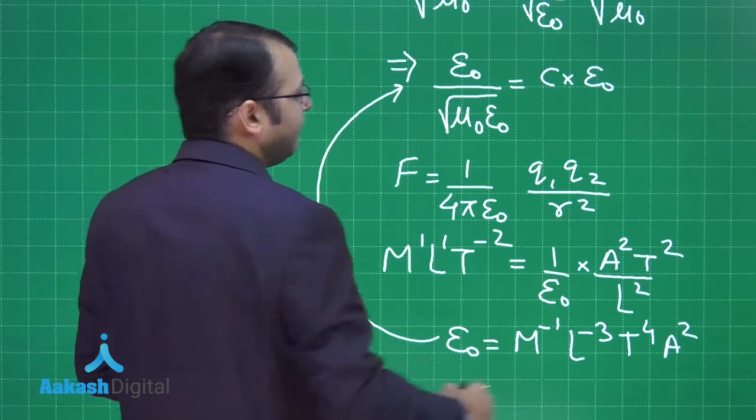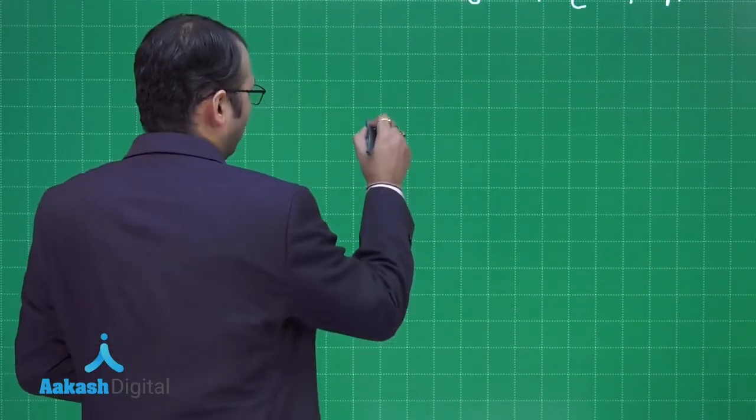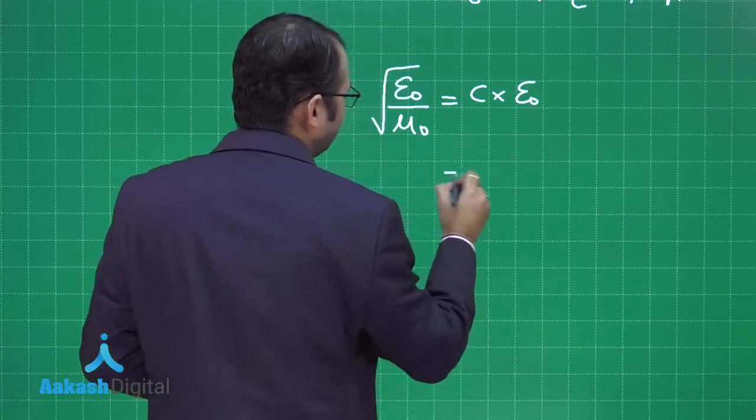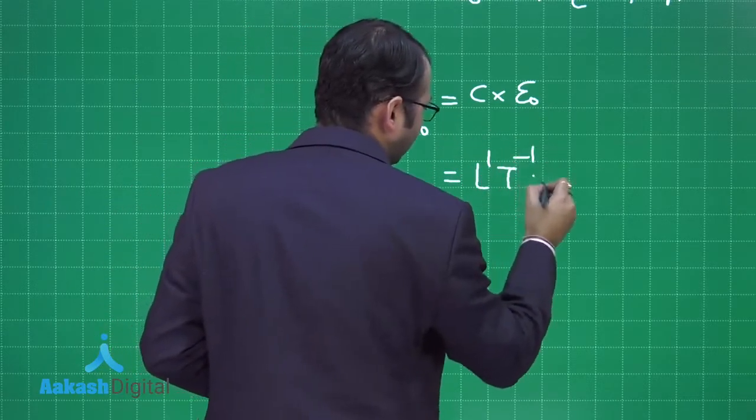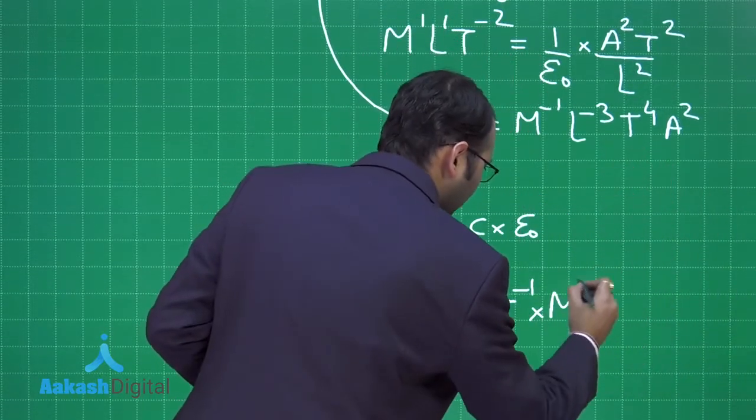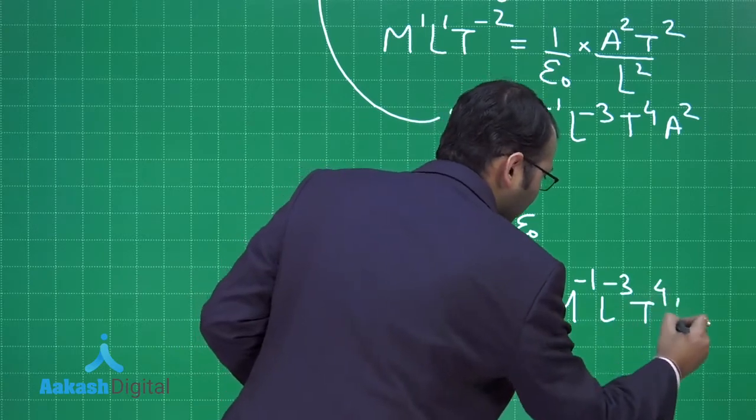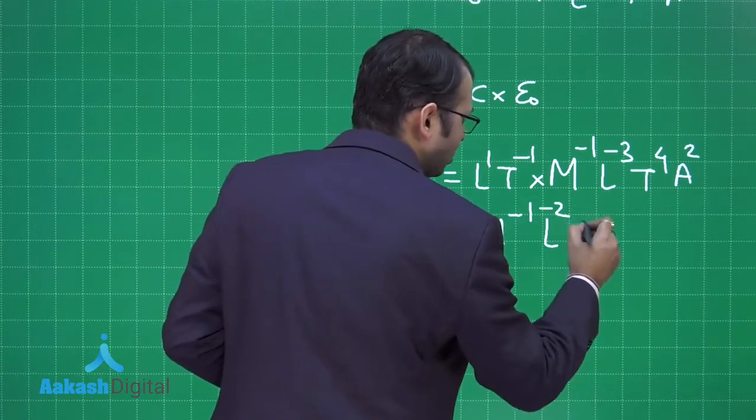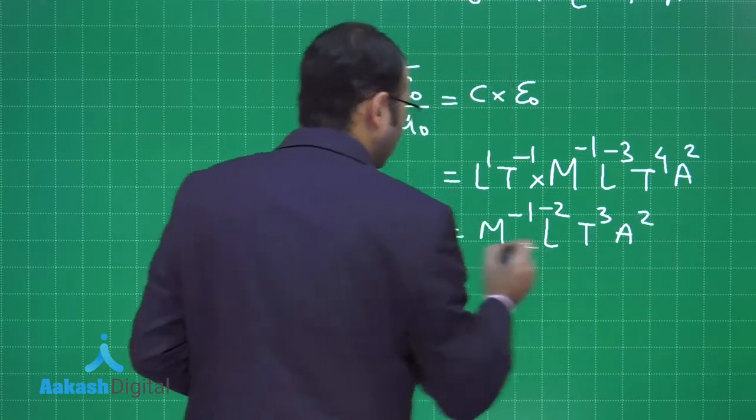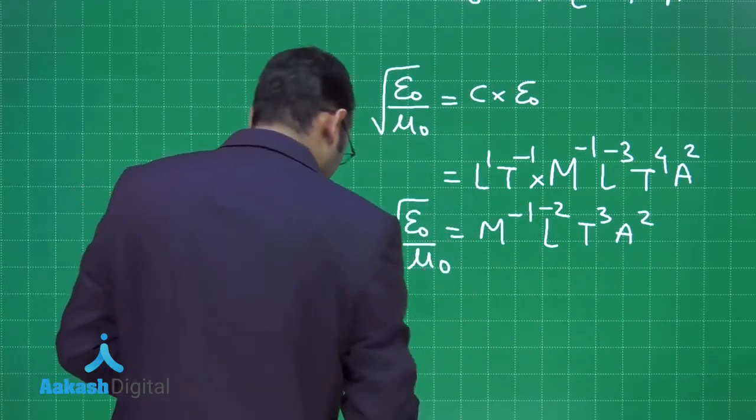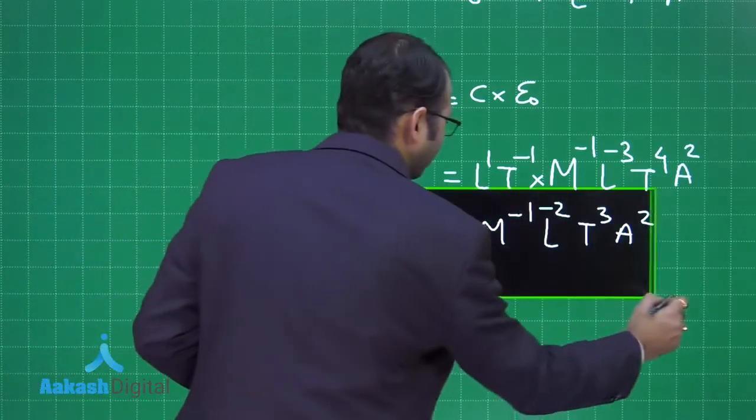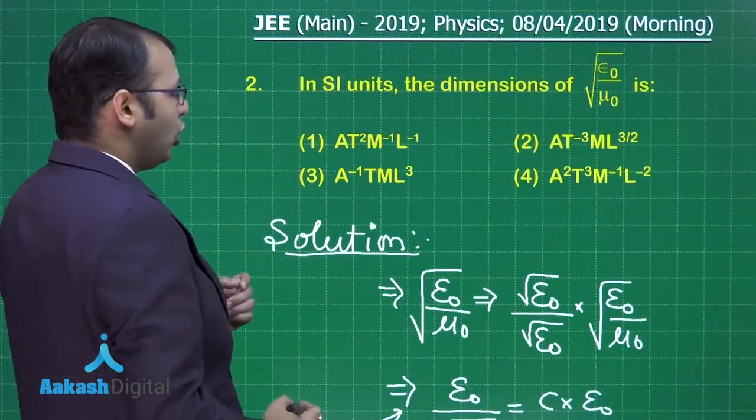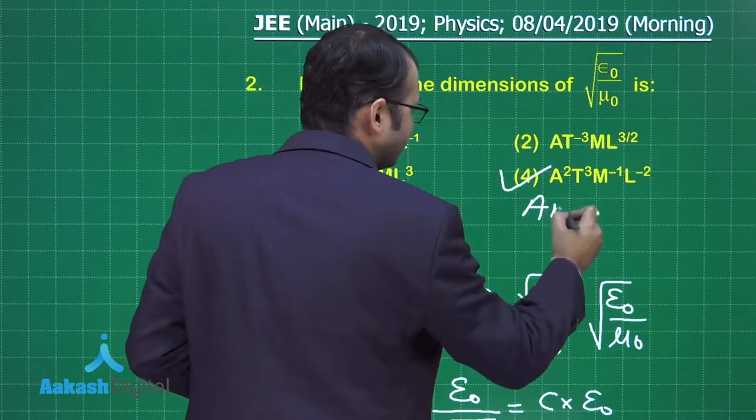Putting the value here, on simplification I have epsilon 0 by mu 0 equals c into epsilon 0. The dimensions of c equals l1 t minus 1 into dimensions of epsilon 0 which is m minus 1, l minus 3, t4, a2. Solving this, we get m minus 1, l minus 2, t3, a2. This is the dimension of epsilon 0 by mu 0, our final relation. Among the four options, option number 4 is the right answer.